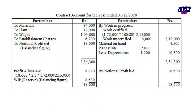We will use the contract account for the year ended 31 December 2020. Materials are our expenses: $94,000. For plant, we treat depreciation at 10%. We debit the full value of the plant and credit the depreciation value.